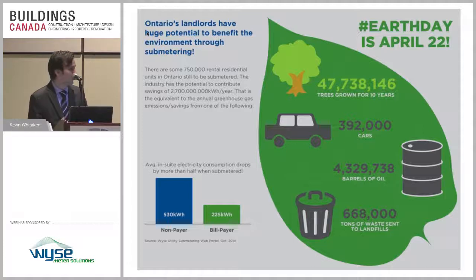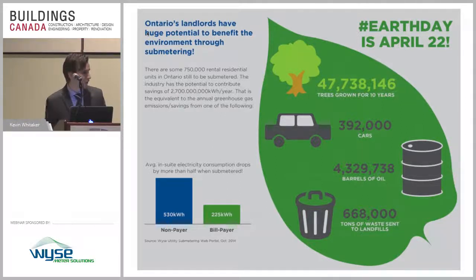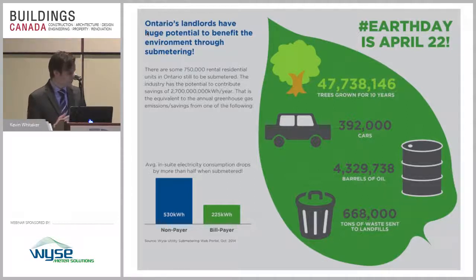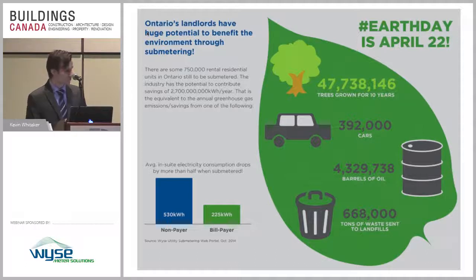If all 750,000 remaining units were sub metered, you can see the type of carbon savings that would contribute to helping the environment. Bill payers who have their consumption measured are going to use less — they're going to close that door when using the AC. There's real data on the difference between a non-bill payer and a bill payer, and you can get a sense of how much of an impact that can make.